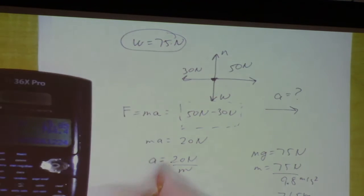And then you can put this in over here. 20 Newtons, 7.65 kilogram meter per second squared. The kilograms cancel out. So 20 divided by 7.65, 2.6 or so.